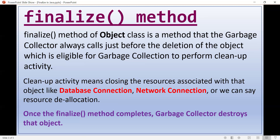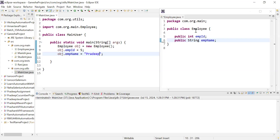Cleanup activity means closing the resources associated with that object — for example, if you are using a database connection, a network connection, or any other resources allocated to that object that need to be deallocated. We will see this with the help of a program. Let me complete the theoretical part first, then I will show you the complete process using an Employee class example.